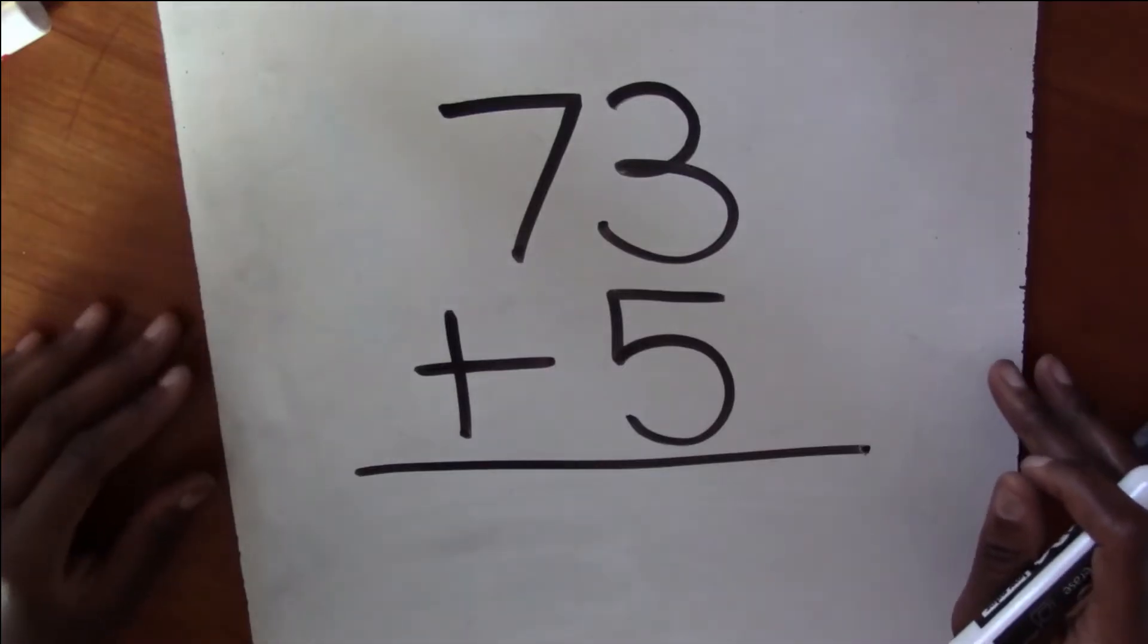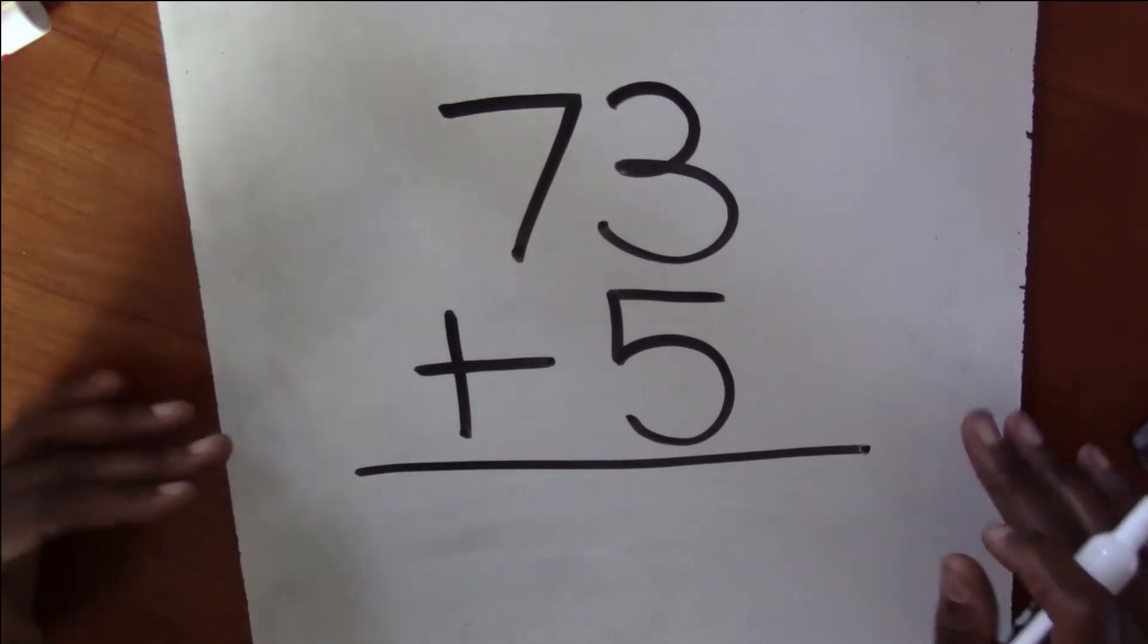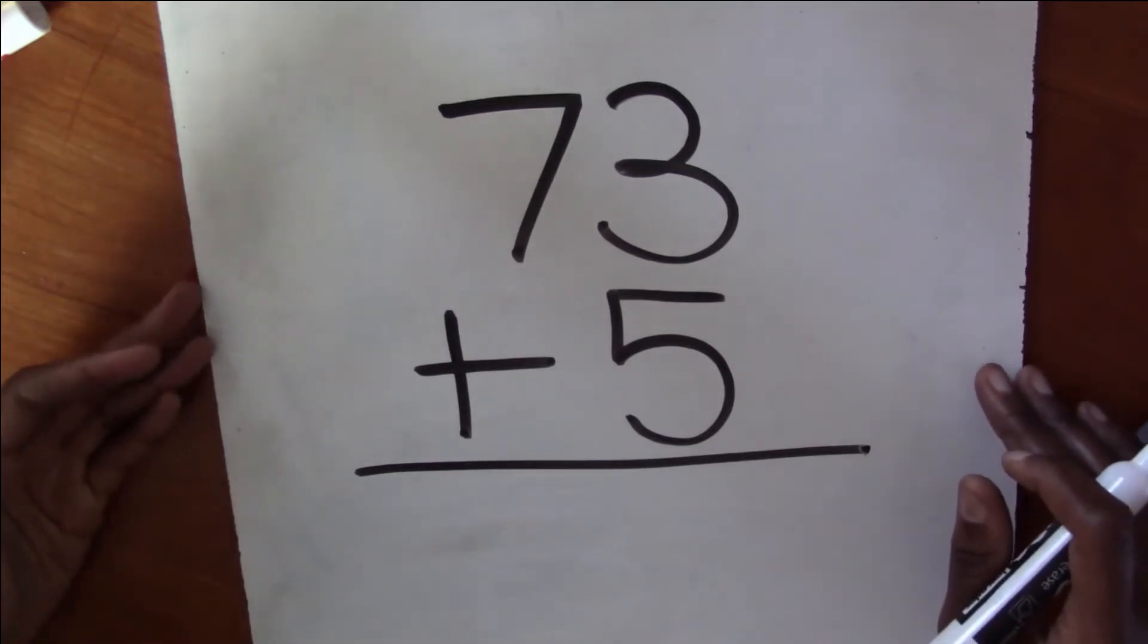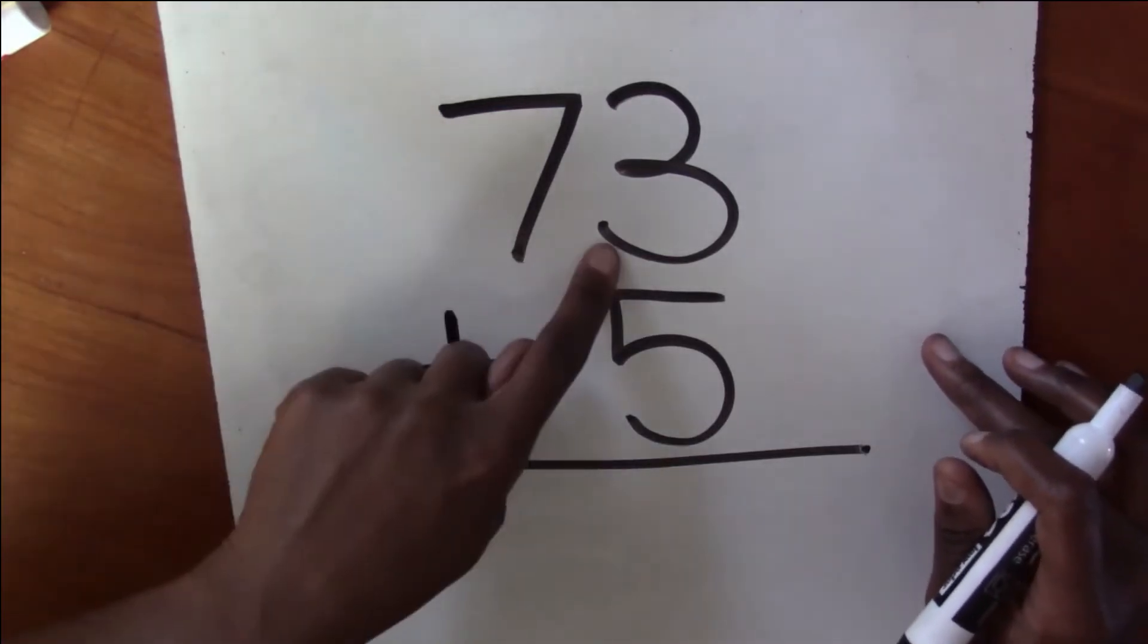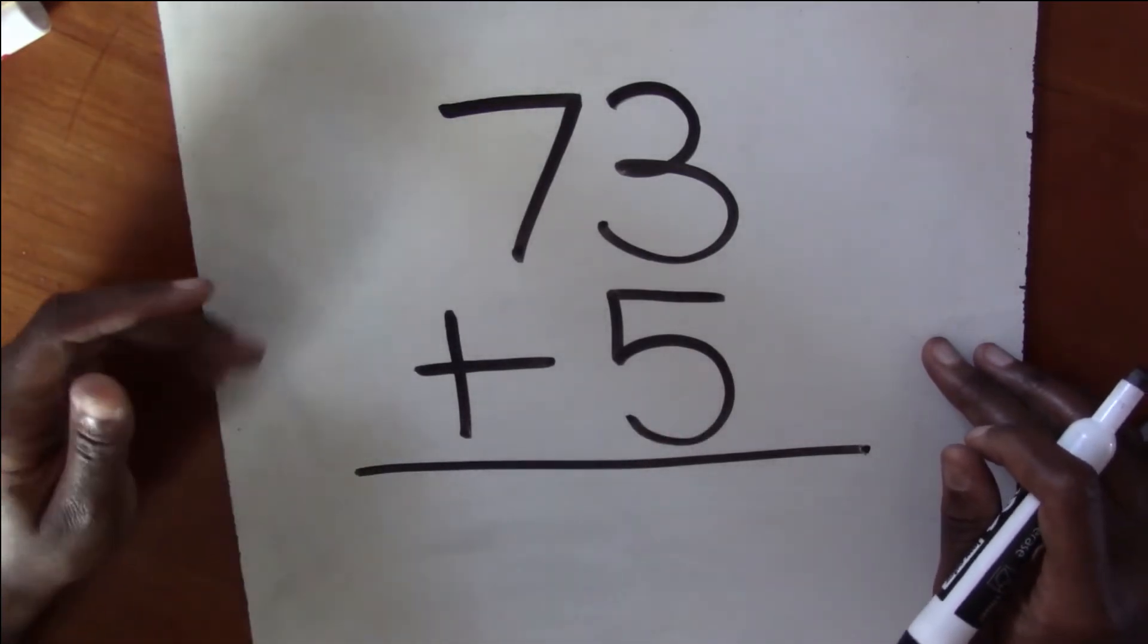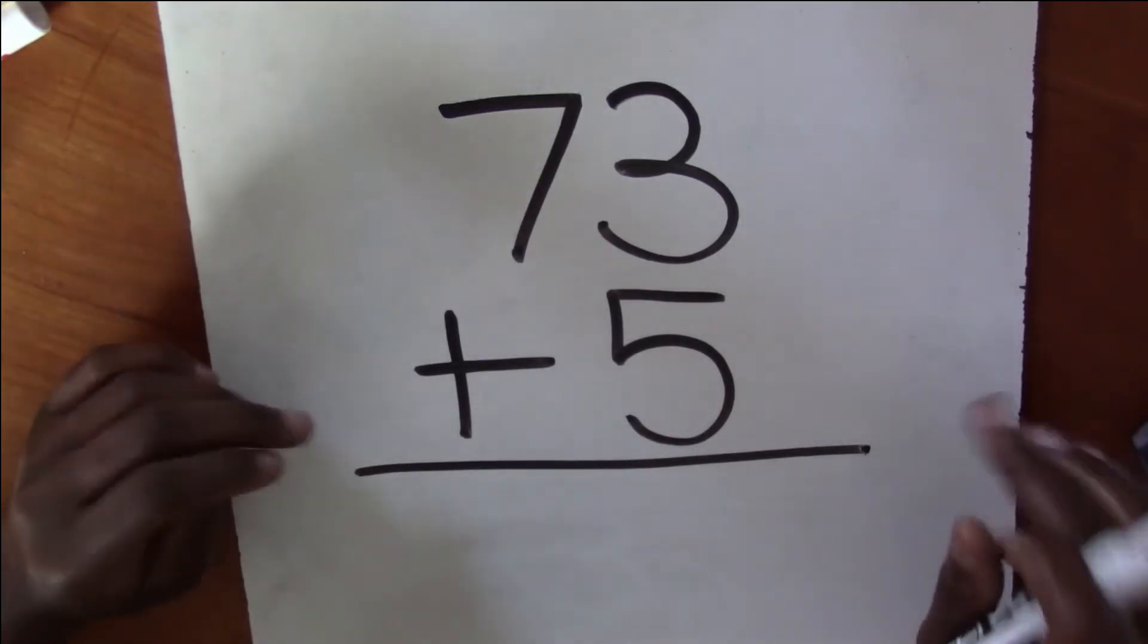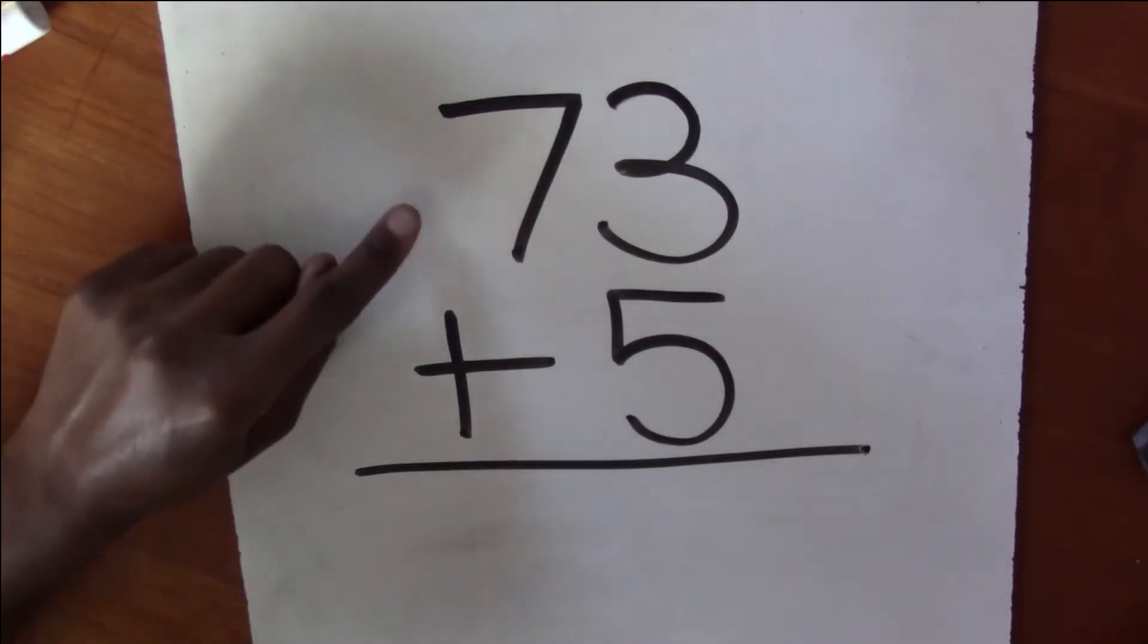All right, so for these next set of problems, you're going to do them by yourself and you're going to come and check your answer with me. So here's your first problem. 73 plus 5. I want you to try to solve that on your own and then I want us to check our answer together. So go ahead and pause the video so you can solve this problem on your own.